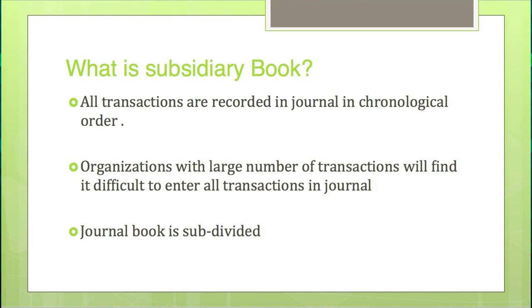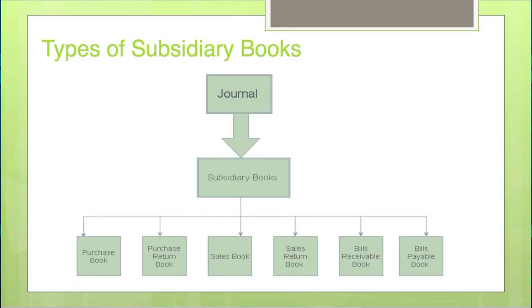Bigger organizations generally follow this; for a smaller organization, all entries can be done in the journal book. The journal is divided into different subsidiary books: Purchase Book, Purchase Return Book, Sales Book, Sales Return Book, Bills Receivable Book, and Bills Payable Book. In this way we can subdivide the journal book.